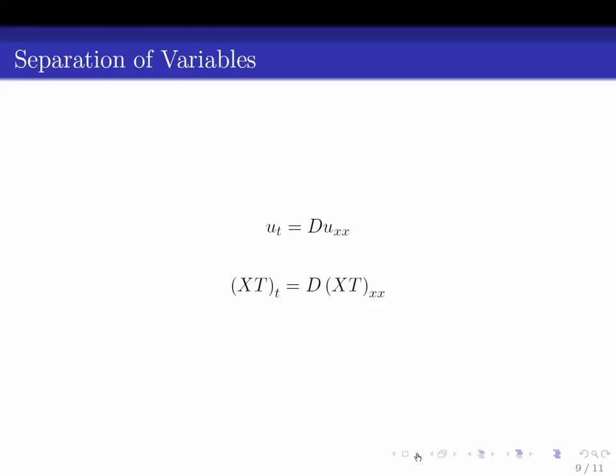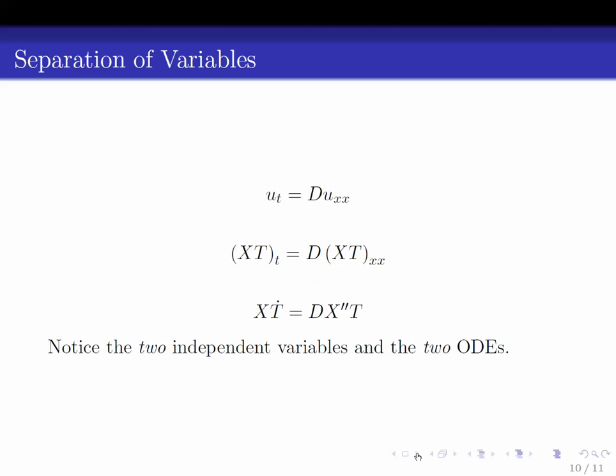The first thing you do is you take u equals XT and you plug it into the PDE and you take the derivatives. Now, since on the left-hand side you're taking the derivative with respect to time, it treats the X as a constant and only takes a derivative with respect to time of the T variable.